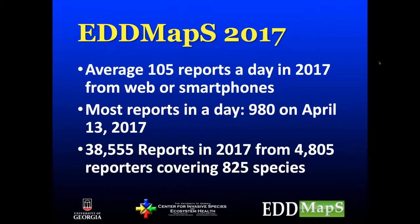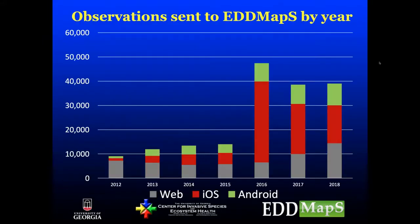Looking at 2017 data, we were averaging EDMAPS-wide about 105 reports a day, with the most being right at 980 coming in in April. Overall, 38,000 reports came in from 4,800 different reporters covering about 825 different species. A graph shows the difference between web versus iOS and Android — we had a spike because of a project in 2016, but overall we're seeing an increase in smartphone use while the web has continued to increase as well.